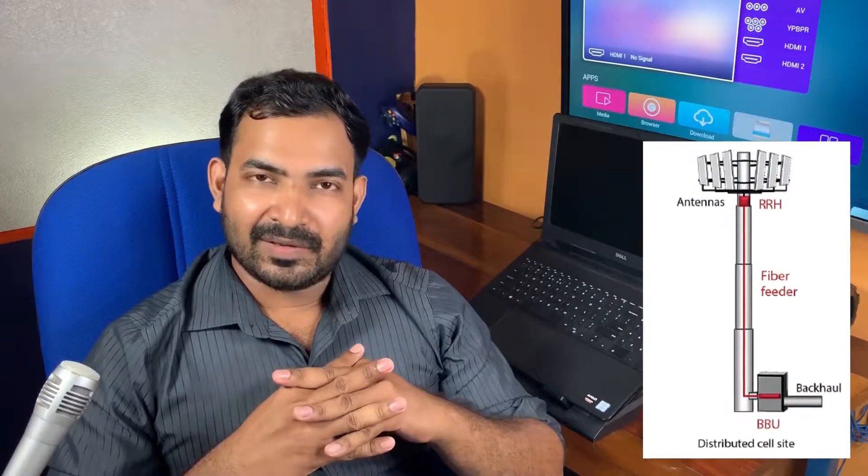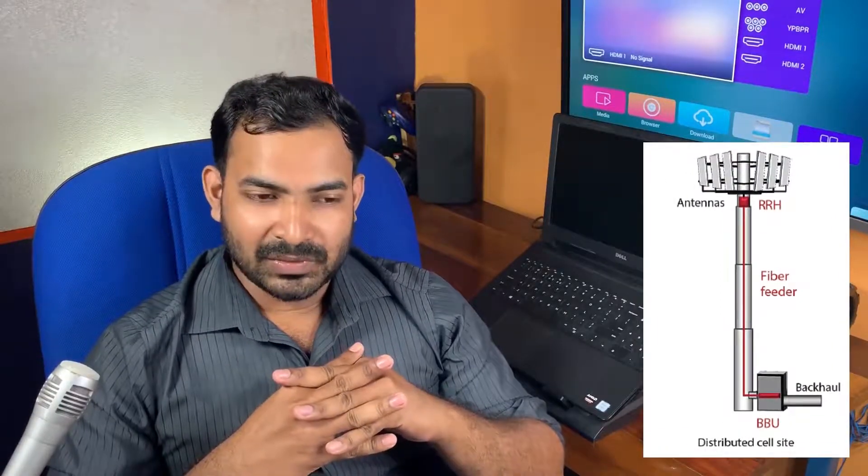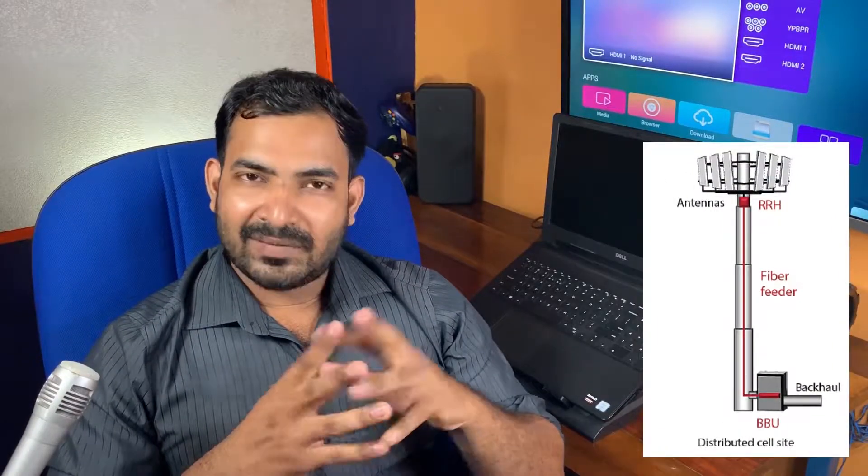We have to get a tower for 4G. We have to get fiber optic cable lines. We have to get a connection between these two antennas. There are also 3G connections in the network.